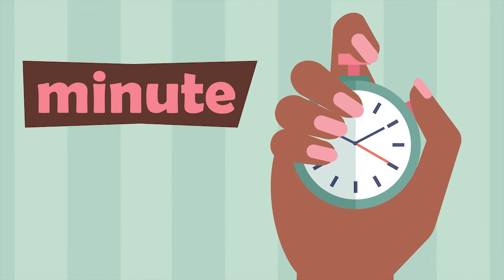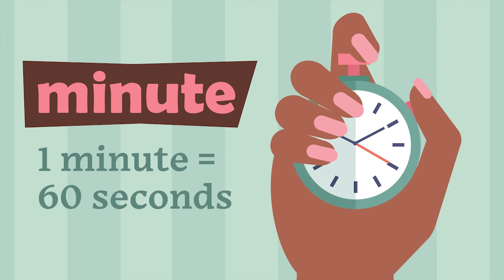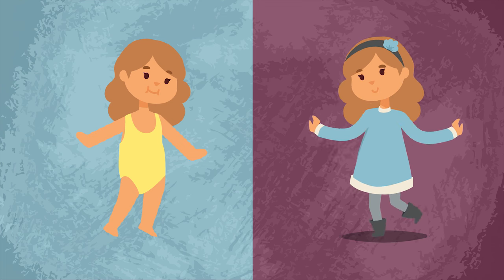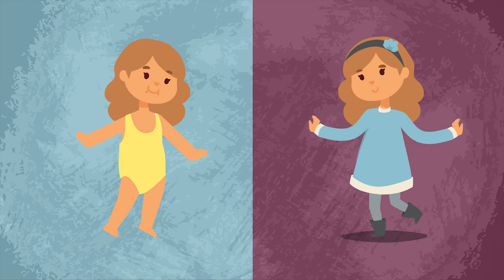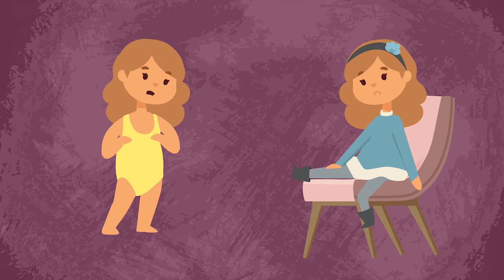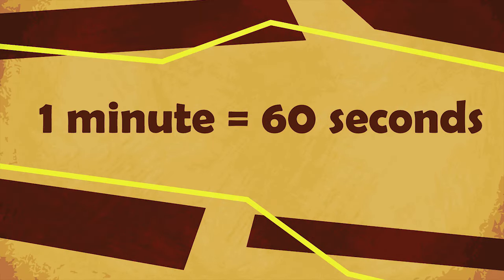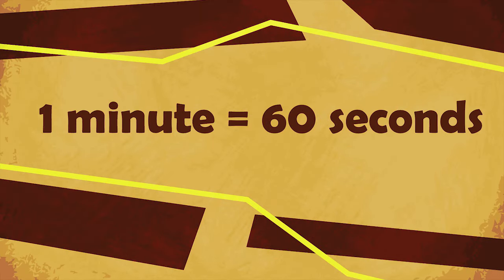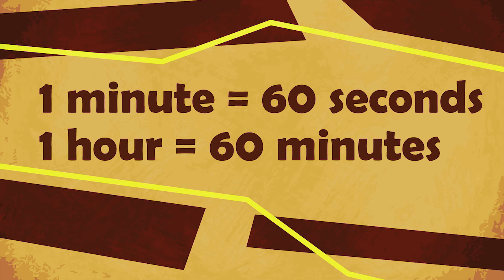The minute is the next largest unit of time. One minute is equal to 60 seconds. Although a minute is longer than a second, it is still a short period of time. You might be able to hold your breath for one minute, or hop on one foot for a minute. However, you would not be able to do these things for one hour. Just as there are 60 seconds in one minute, there are 60 minutes in one hour.